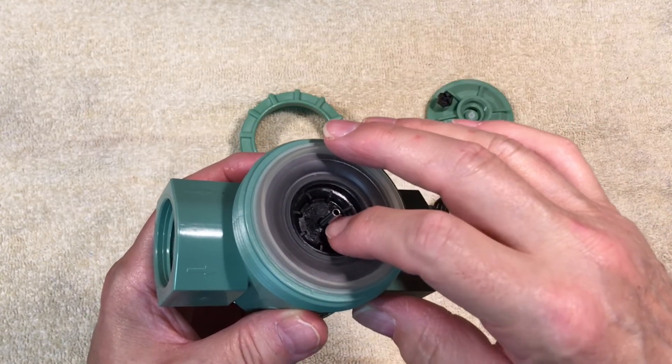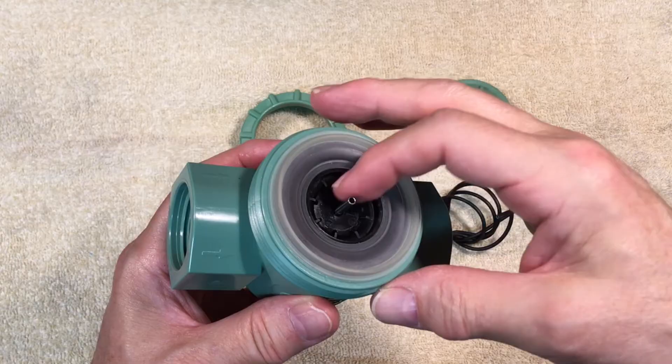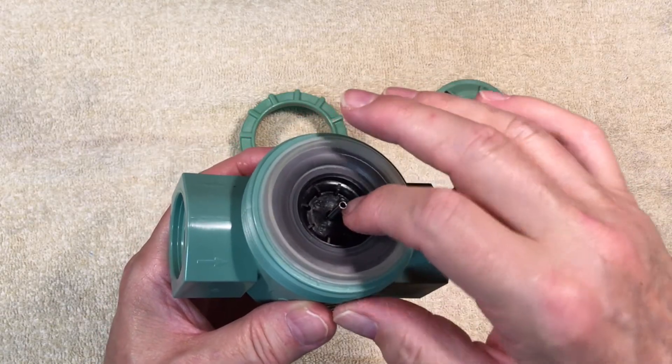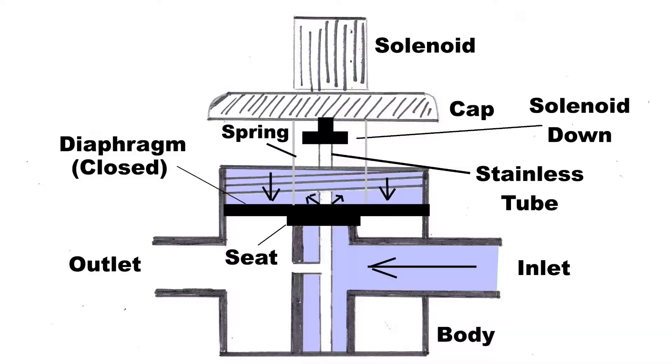A little stream of water can flow up and around the stainless tube and fill up the upper chamber of the valve, which is the part above the diaphragm. So you have water between the diaphragm and the cap when the valve is closed.